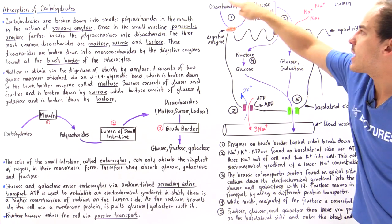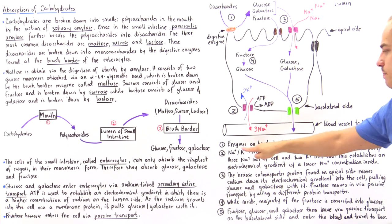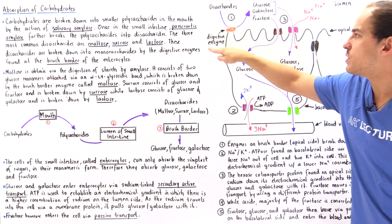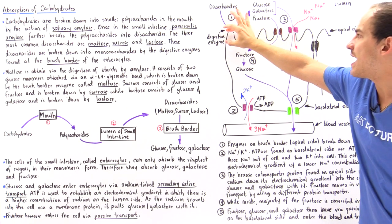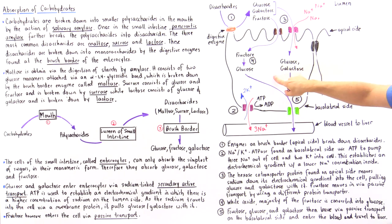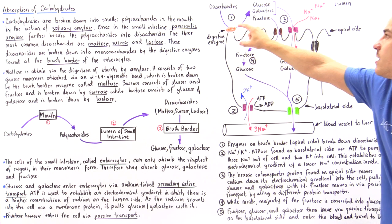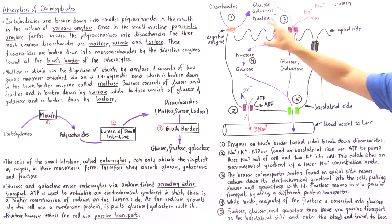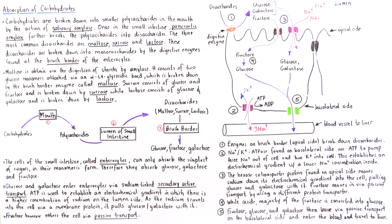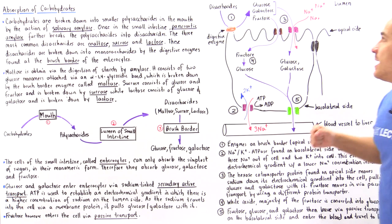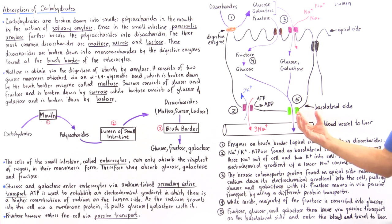In diagram one, we have these special digestive enzymes found on the brush border of the enterocyte — on the apical membrane — that break down our disaccharides into their individual monosaccharide form.